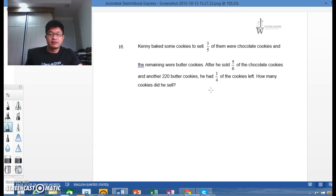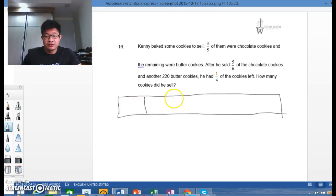We start by drawing a model. When we start by drawing a model with 5 parts, because three-fifths of them were chocolate cookies, I'm not going to be very stingy. I shall draw a big one here. And here we go, 5 parts. We go 1, 2, 3, 4, and 5. So three-fifths of them were chocolate cookies, so here will be chocolate cookies. And this one here would be butter cookies.